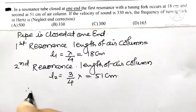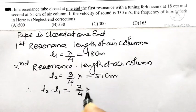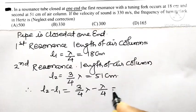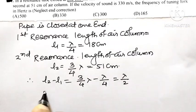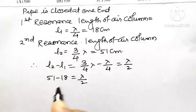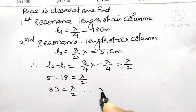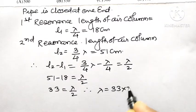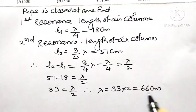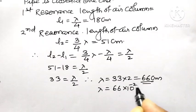Therefore, L2 minus L1 equals 3λ/4 minus λ/4, which equals λ/2. So 51 minus 18 equals 33, which equals lambda by 2. Therefore, lambda equals 33 into 2, that is 66 cm, so wavelength lambda equals 66 into 10 to the power minus 2 meter.